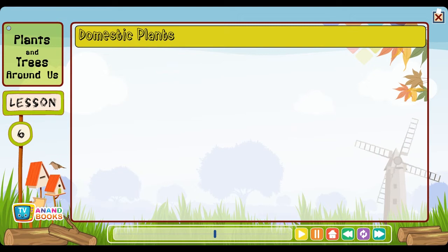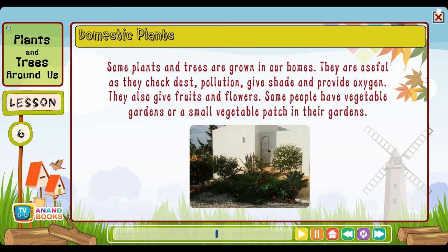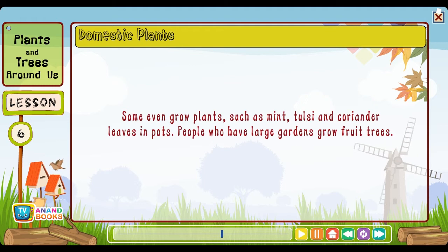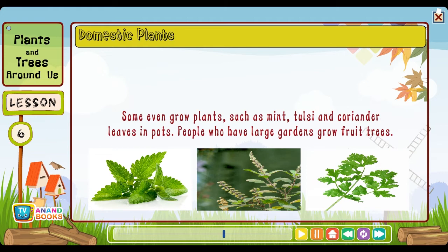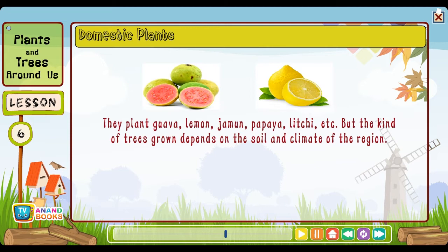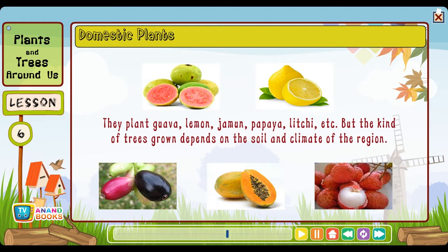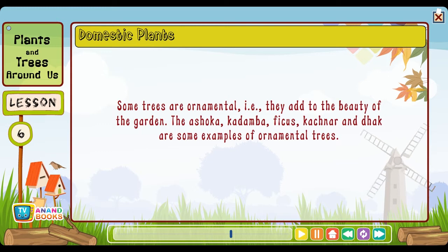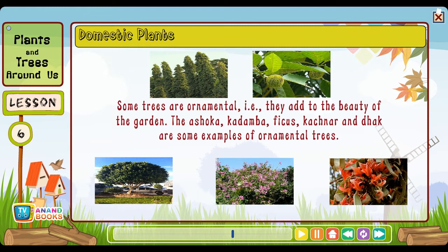Domestic plants: Some plants and trees are grown in our homes — they are useful as they check dust pollution, give shade and provide oxygen, and also give fruits and flowers. Some people have vegetable gardens or a small vegetable patch. Some even grow plants such as mint, tulsi and coriander leaves in pots. People who have large gardens grow fruit trees — guava, lemon, jamun, papaya, lychee etc. The kind of trees grown depends on the soil and climate of the region. Some trees are ornamental — they add beauty to the garden. The Ashoka, Kadamba, Ficus, Kachnar and Dhak are some examples of ornamental trees.